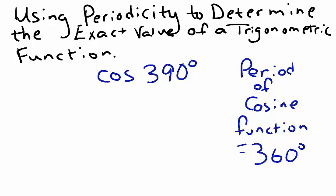To evaluate cosine of 390 degrees, we need to express 390 degrees as a multiple of 360 degrees plus a reference angle. In this case, we can express cosine of 390 degrees as cosine 360 degrees plus 30 degrees.